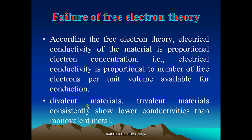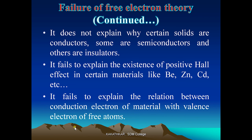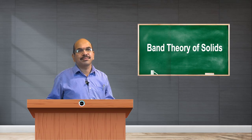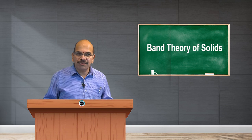Free electron theory fails to explain the existence of different types of materials — conductors, semiconductors, and insulators — and cannot explain the conductivity process across all three. It also fails to explain the positive Hall effect in certain materials like bismuth and zinc, and fails to explain the relation between conduction electrons of a material and valence electrons of free atoms. Therefore, one has to adopt band theory of solids, which will be discussed in the next part.